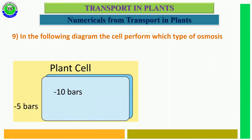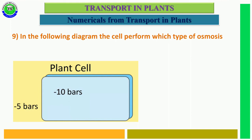Question number 9. In the following diagram, the cell performs which type of osmosis? The surrounding solution has more water potential than the cell, so water movement takes place from outside to inside of the cell — it is called endosmosis.